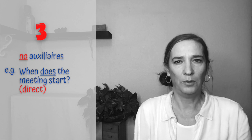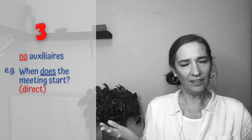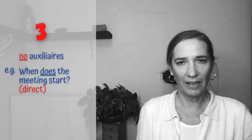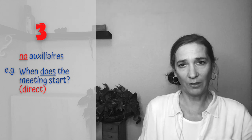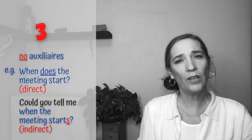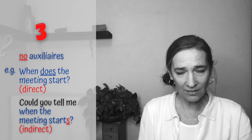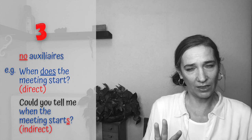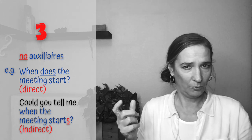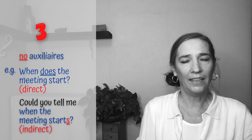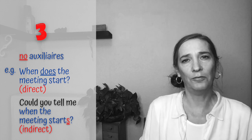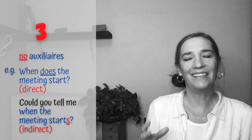Rule number three: we do not use auxiliaries in indirect questions. For example, when does the meeting start? — that is a direct question. But an indirect question would be, could you tell me when the meeting starts? Because we're not using the auxiliary does, which is third person singular, to indicate it — which is the meeting — then we need to conjugate the verb start: could you tell me when the meeting starts?